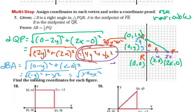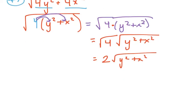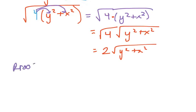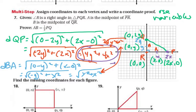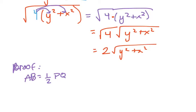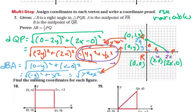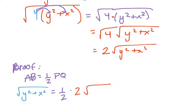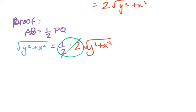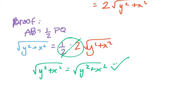To show our proof: we want AB = ½ · PQ. Since AB = √(Y² + X²) and PQ = 2√(Y² + X²), substituting the half gives ½ · 2√(Y² + X²) = √(Y² + X²). The 2 and the ½ cancel, and we get √(Y² + X²) = √(Y² + X²), which is a true statement. The proof is complete.